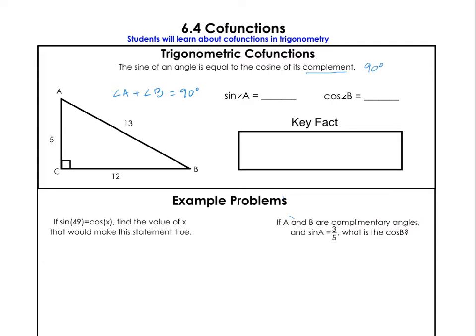Now that we know A and B always add up to 90, we're going to find the sine of A and the cosine of B and something cool is going to happen. Let's find the sine of A — we start at A and label our sides: opposite, hypotenuse, and adjacent. The sine of A is opposite over hypotenuse, which is 12 over 13.